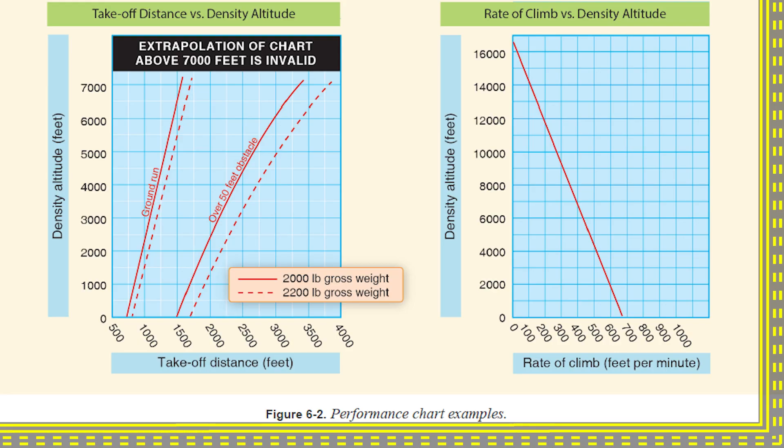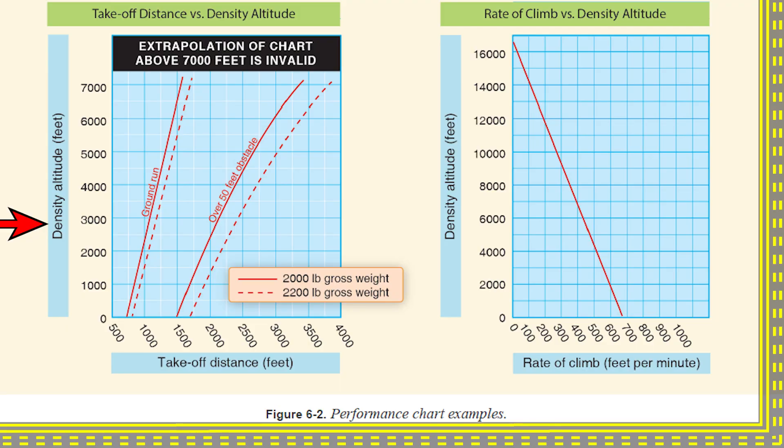This one from chapter six of the airplane flying handbook has your density altitude on the left, which I get from my local AWOS. Density altitude, remember, is what the airplane feels. It behaves as if it's actually at that altitude. So I mentioned earlier that my density altitude in the afternoon was 2,700 feet. So I'd start here on the left and go over until I intersect my weight. Then I'd go down to get my ground roll here and my total distance over a 50-foot obstacle over here.